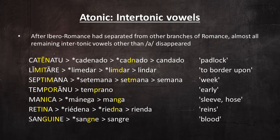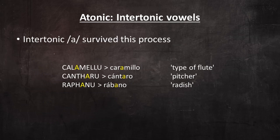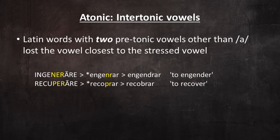At a later stage, after Ibero-Romance had separated from other branches of Romance, almost all remaining intertonic vowels other than A disappeared. Here are some examples. As I mentioned, intertonic A survived this process — observe these examples. Latin words with two pretonic vowels other than A lost the vowel closest to the stressed vowel.